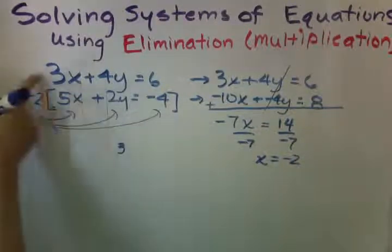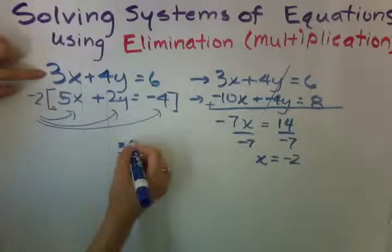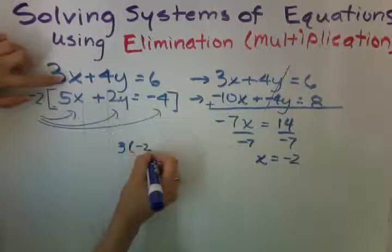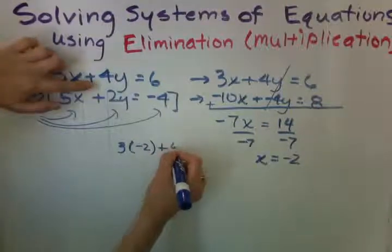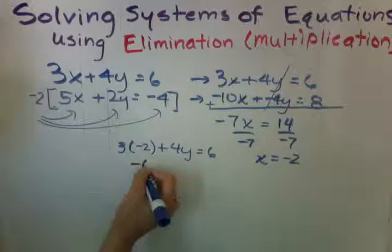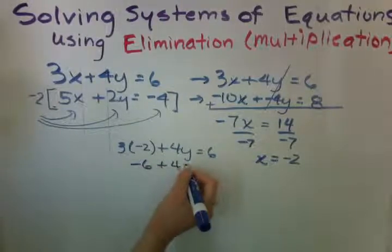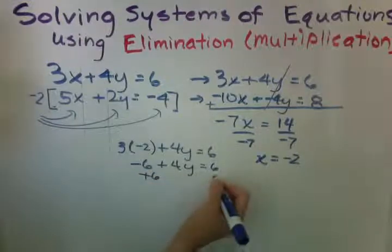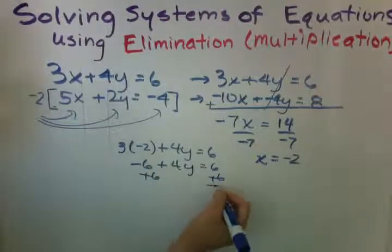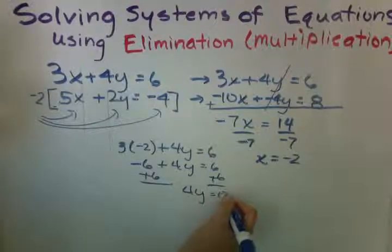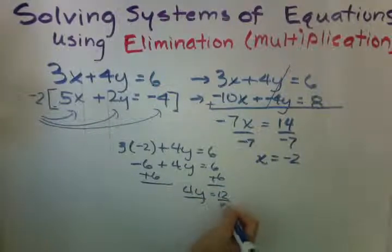I will go ahead and substitute it into the first equation. x is now negative 2. 4y equals 6. And we're just solving for y at this point. Add 6 to both sides. 4y equals 12. Divide both sides by 4.